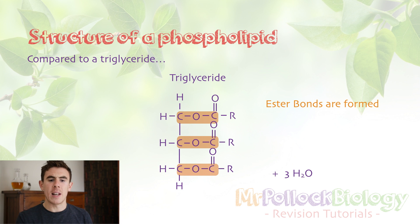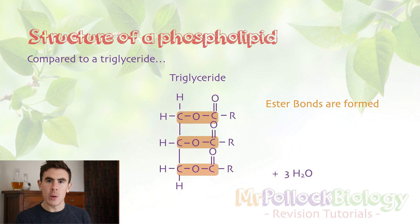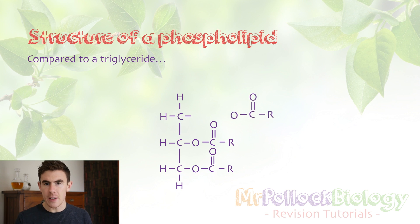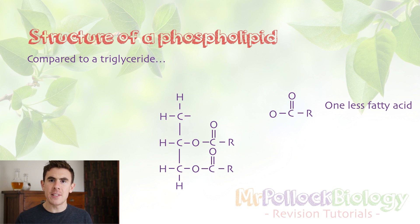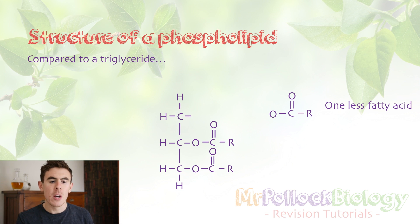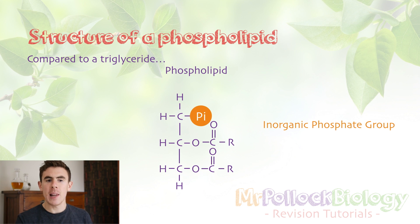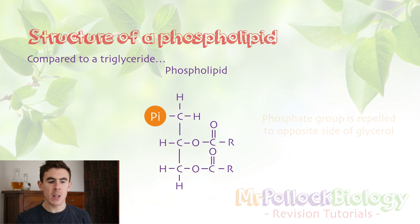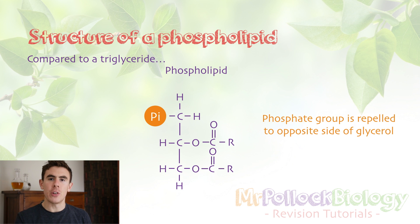If we take that triglyceride and look at how we can change it into a phospholipid, it's really quite straightforward. Most of the molecule is exactly the same. The only thing we do is remove one fatty acid and instead add an inorganic phosphate group — that's PO4- — in the place of that third fatty acid. Because of the properties of the phosphate group and the fatty acids, they repel each other, so the phosphate group rotates to the other side of the molecule, on the opposite side of the glycerol to the two fatty acid chains.